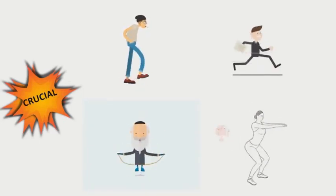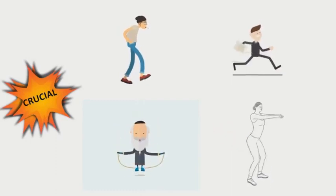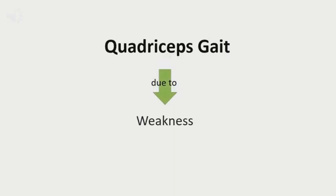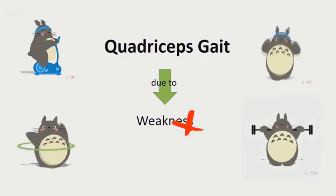Specifically, the vastus medialis plays an important role of stabilizing the patella and the knee joint in gait. Weakness of quadriceps might lead to some very serious consequences. We should have regular exercise to prevent our muscle from becoming weak.